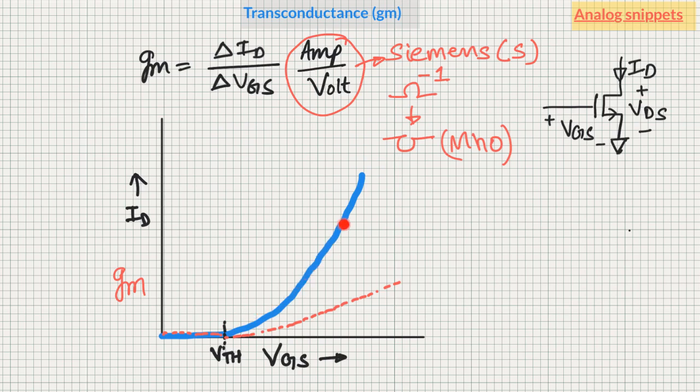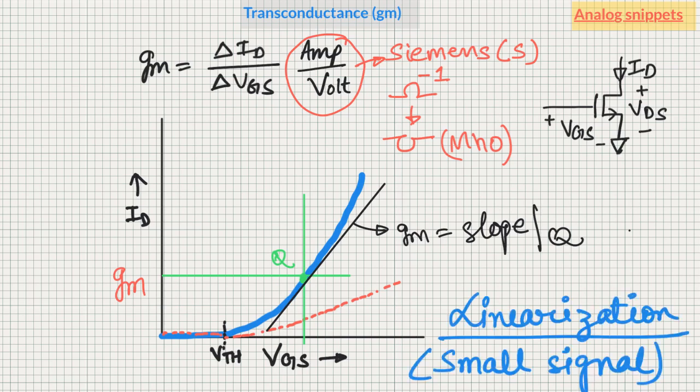In a typical analog circuit we don't usually traverse up and down this curve. We usually have what we call a DC operating point or quiescent point. Here we have a fixed VGS and fixed ID in a transistor. If we calculate gm at this quiescent point, then gm will be the slope of this curve at this quiescent point from this equation. This is called linearization of the circuit around the quiescent point. Another term for this process is small signal analysis, and this gm is a small signal gm.